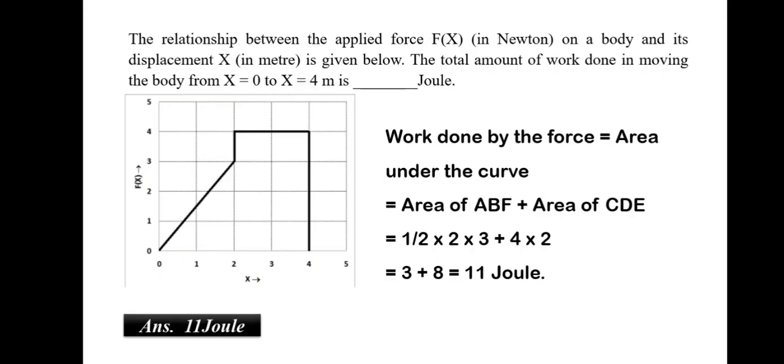The relationship between the applied force on a body and its displacement is given below. The total amount of work done in moving the body from x1 to x4 is. So, we can see if you look at this figure, you can draw a rectangle and a triangle. So, when we draw a triangle and a rectangle, we can make points as A, B, C, D, E, F such that area of A, B, F plus area of C, D, E will be equal to the amount of work done. So, that is half into 2 into 3 plus 4 into 2 which would be about 11 joules.